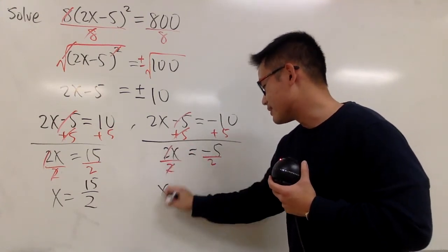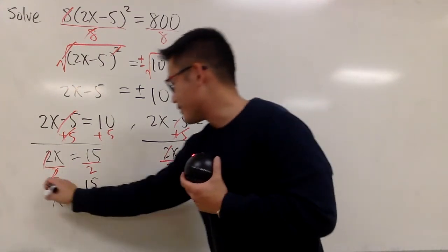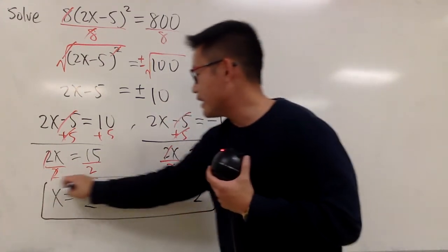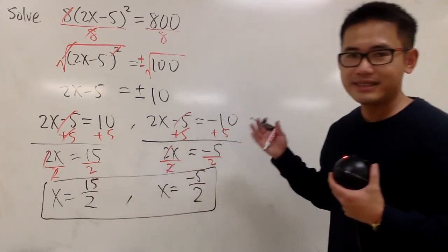And we are done. x is equal to negative 5 over 2. Two answers right here: 15 over 2 and negative 5 over 2. Then this right here is it.